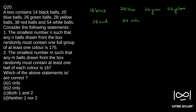Consider the following statements. The first statement: the smallest number n such that any n balls drawn from the box randomly must contain one full group of at least one color is 175. The second statement: the smallest number m such that any m balls drawn from the box randomly must contain at least one ball of each color is 167. Which of the above statements is or are correct?